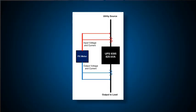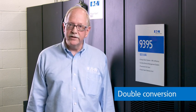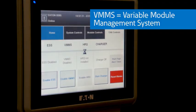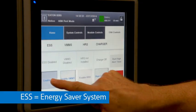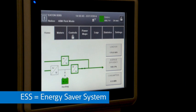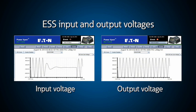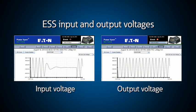Here's how we use them on our UPSs. Here at the Raleigh Experience Center, we can show you how our 93-95 UPSs work in double conversion, variable module management (VMMS), and high efficiency mode (ESS). With the auxiliary channels on the power expert meter, I can show you the input and output voltage before and after a voltage anomaly to demonstrate the fast transfer time during our ESS mode of operation. As you can see here, the transition time for ESS is less than two milliseconds.